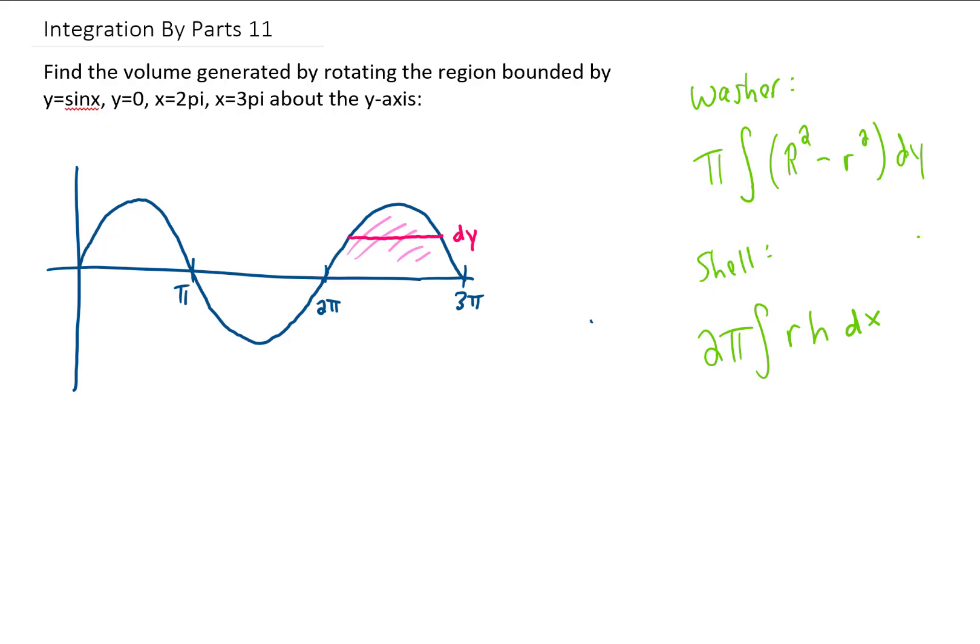Instead, what I'm going to suggest is slicing up this little region vertically. The height of this slice is then given by the function y equals sine of x, but the thickness of this slice is dx. So I think that our variables and our integral are going to work out a little bit more nicely if we use the shell method. Let's try it out.